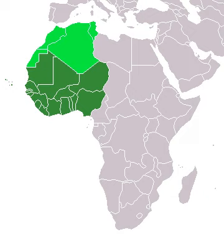The Oyo Empire was a Yoruba Empire of what is today western and north-central Nigeria. Established in the 15th century, the Oyo Empire grew to become one of the largest West African states. It rose through the outstanding organizational skills of the Yoruba, wealth gained from trade and its powerful cavalry. The Oyo Empire was the most politically important state in the region from the mid-17th to the late 18th century, holding sway not only over most of the other kingdoms in Yorubaland, but also over nearby African states, notably the Fon Kingdom of Dahomey in the modern Republic of Benin to the west.